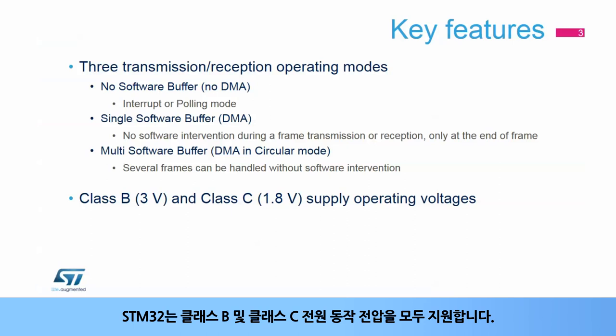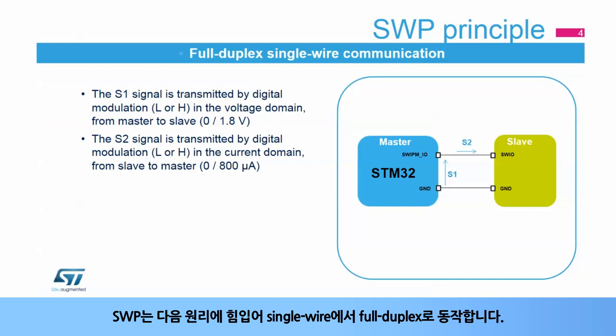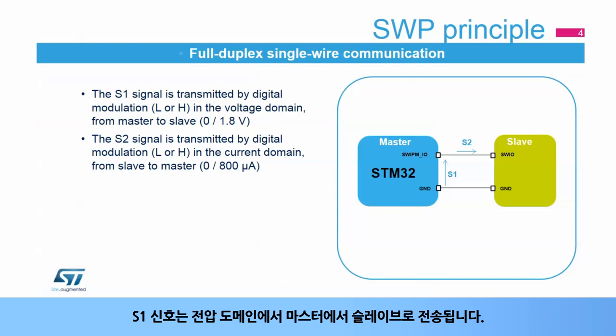The STM32 supports both Class B and Class C supply operating voltages. The SWP is full duplex on a single wire thanks to the following principle: the S1 signal is transmitted in the voltage domain from master to slave, and the S2 signal is transmitted in the current domain from slave to master.